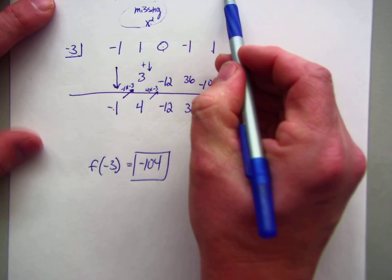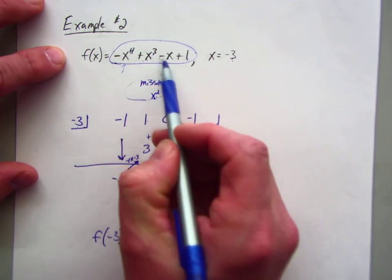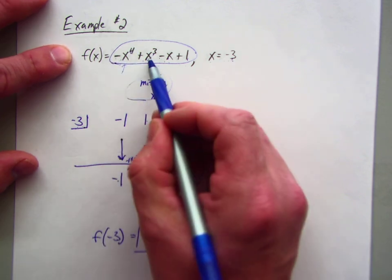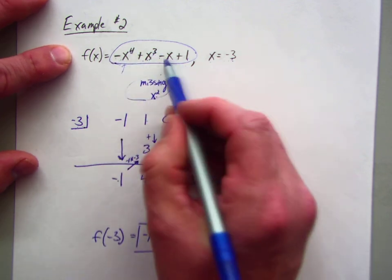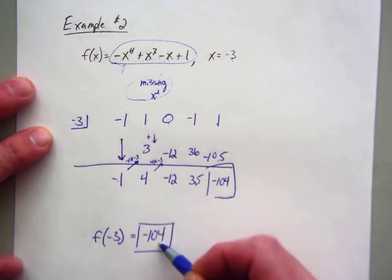Again, if I take negative 3 and plug it back in for x and use direct substitution, so I take negative 3, take it to the 4th power times negative 1, then I take negative 3 to the 3rd power, and then put negative 3 here and then add and subtract, you'll get negative 104.